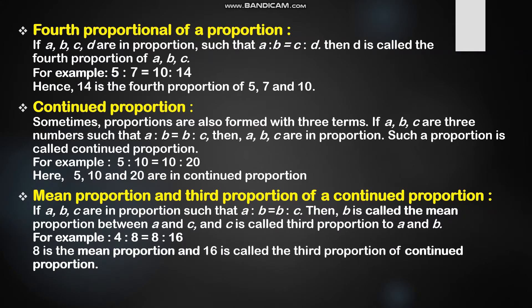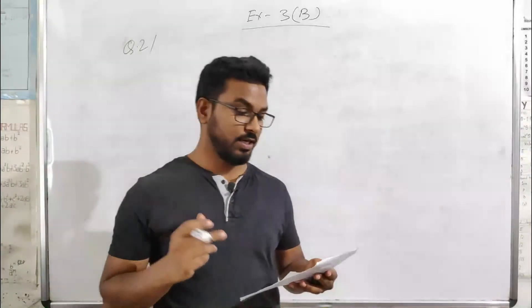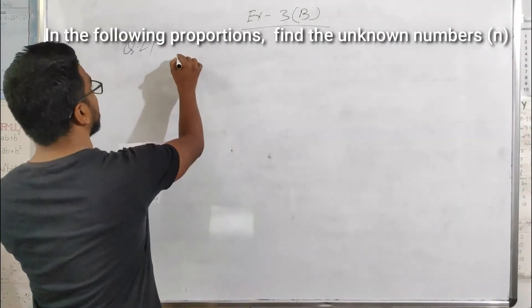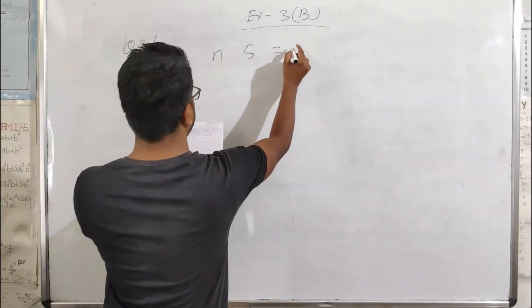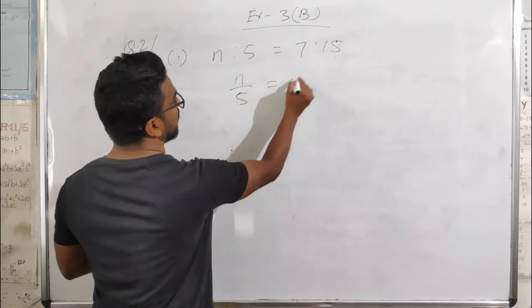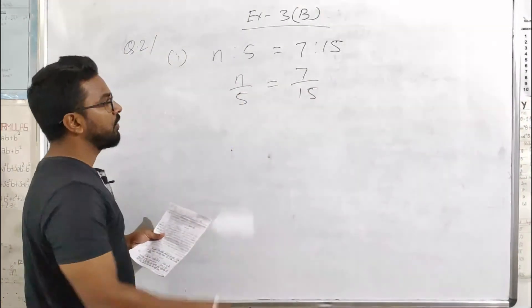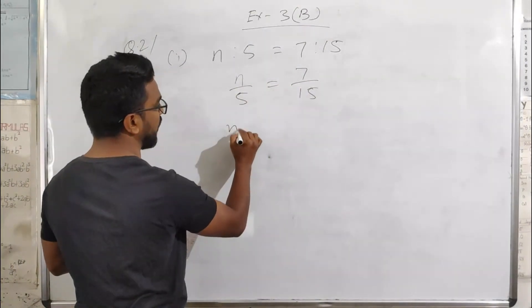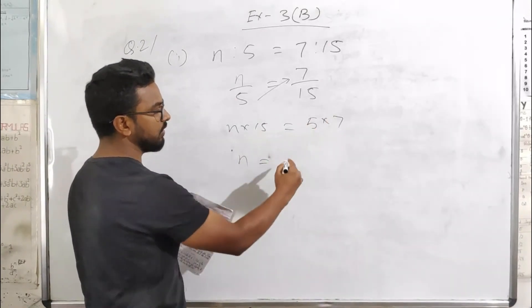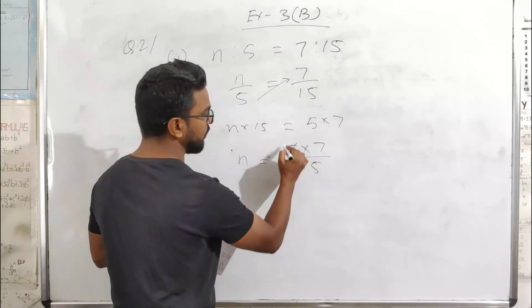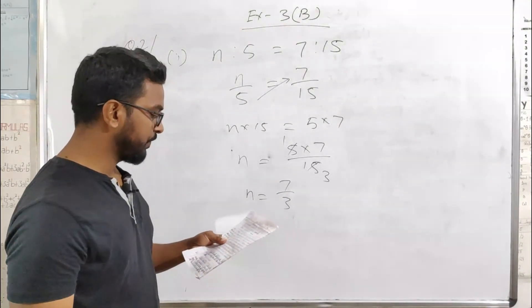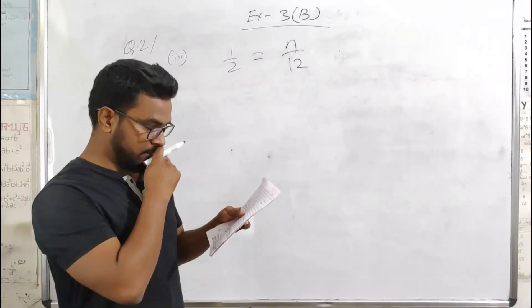Now let's solve some questions from Exercise 3B on ratio and proportion. Question 2 asks us to find the unknown number n. The first question gives n ratio 5 proportional to 7 ratio 15. Cross multiplying gives n times 15 equals 5 times 7. Taking 15 to the other side, we divide: n equals 7 by 3.